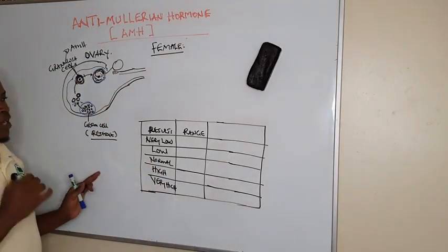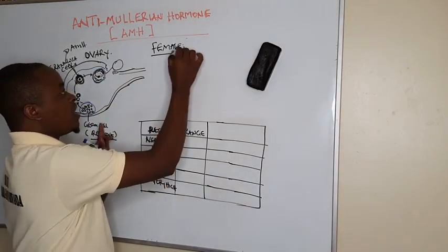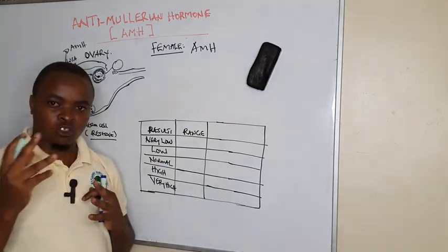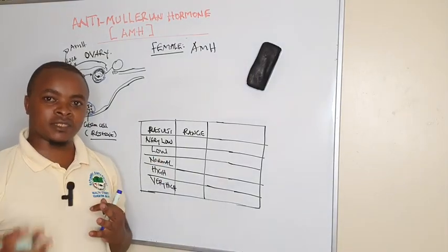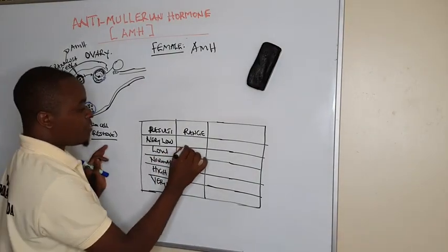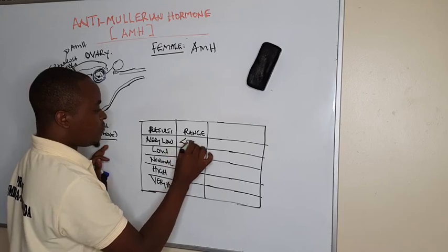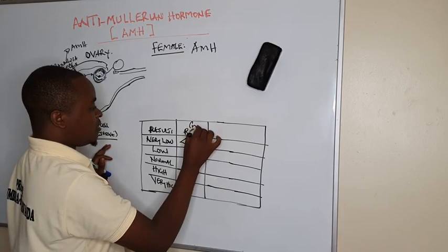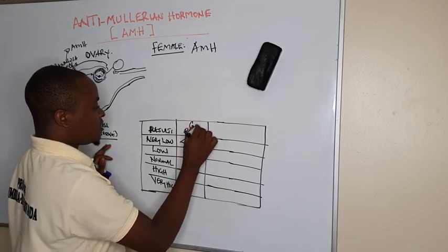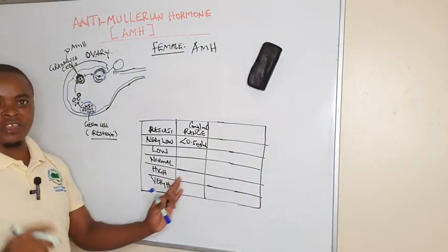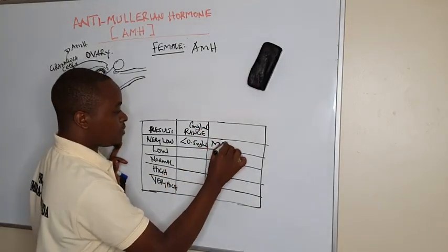When we do your test of anti-mullerian hormone, which is being produced by the maturing ovary, and we find it is low, it means the egg reserves are finished. When it is very low, below 0.5 nanograms per mil, you have reached menopause.